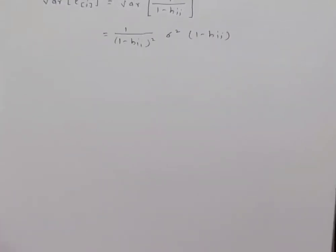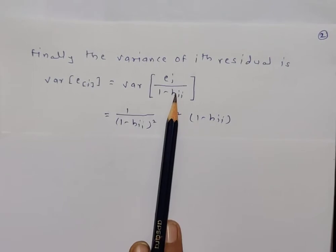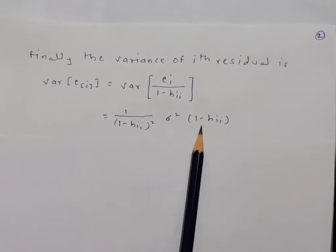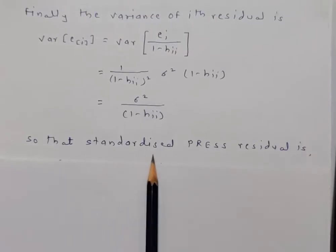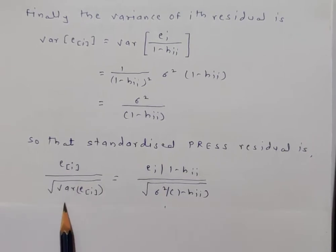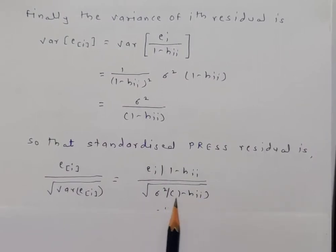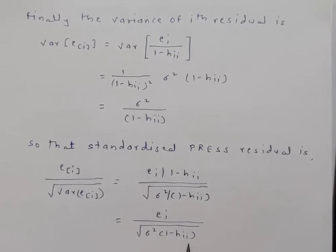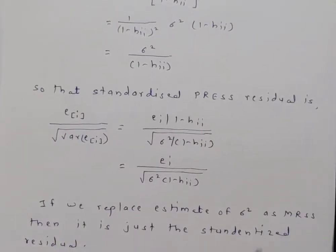The variance of the i-th PRESS residual is: Var(e(i)) = Var(e_i) / (1 − h_ii)² = σ²(1 − h_ii) / (1 − h_ii)² = σ² / (1 − h_ii). Hence the standardized PRESS residual is e(i)/(1 − h_ii) divided by √(σ²/(1 − h_ii)), which simplifies to e_i / √(σ²(1 − h_ii)). If we replace σ² with its estimate MS_Res, this becomes the standardized residual.